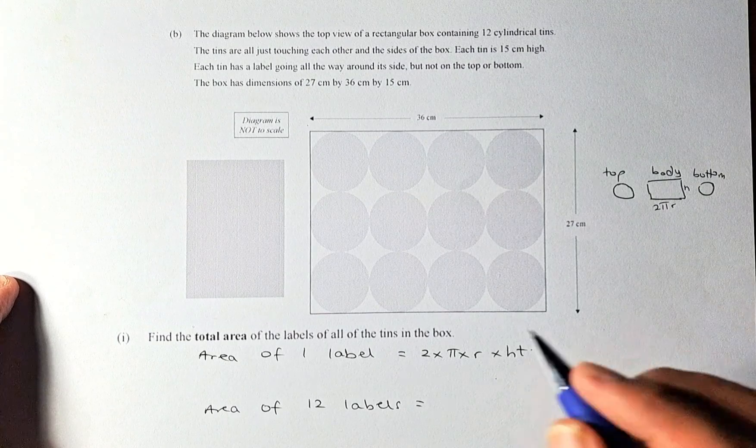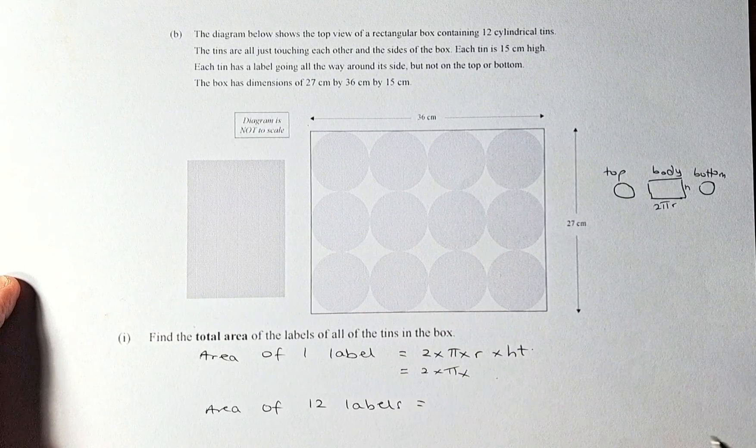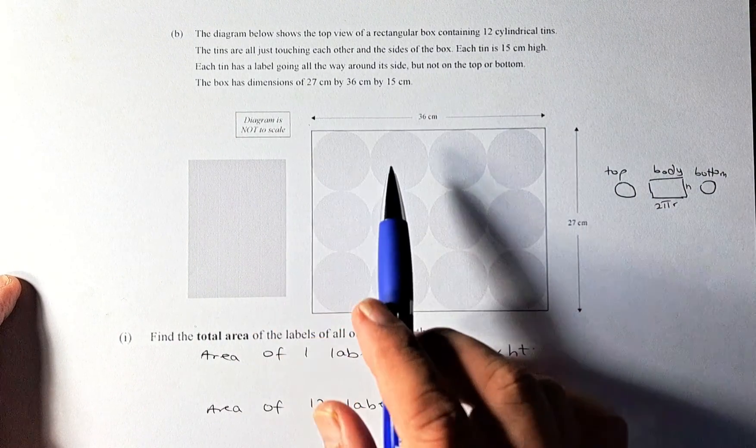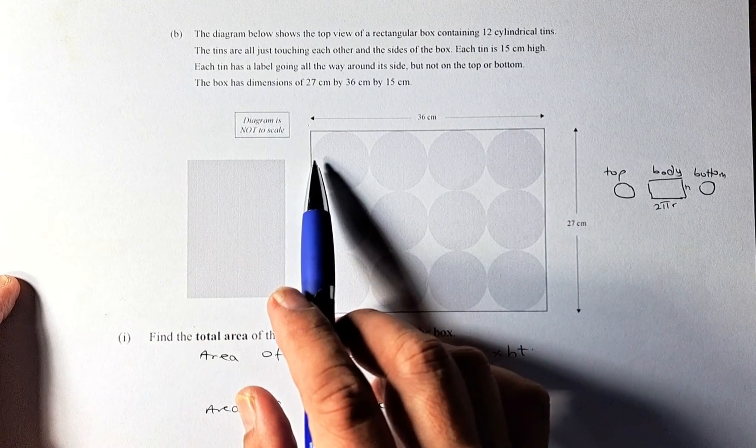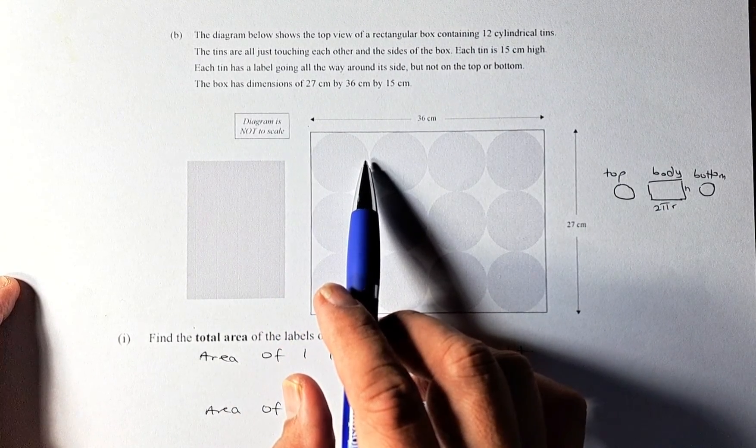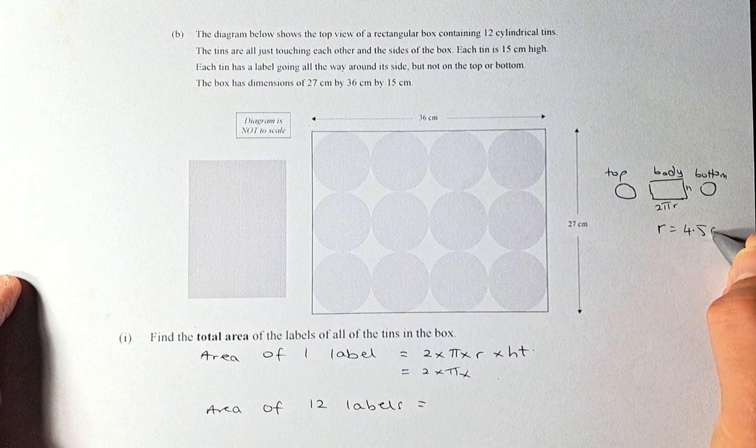To get that it's very simple - we're going to substitute the value 2 times π times the radius. The diameter is 36 divided by 4, which is 9, so the radius is going to be 4.5 centimeters.